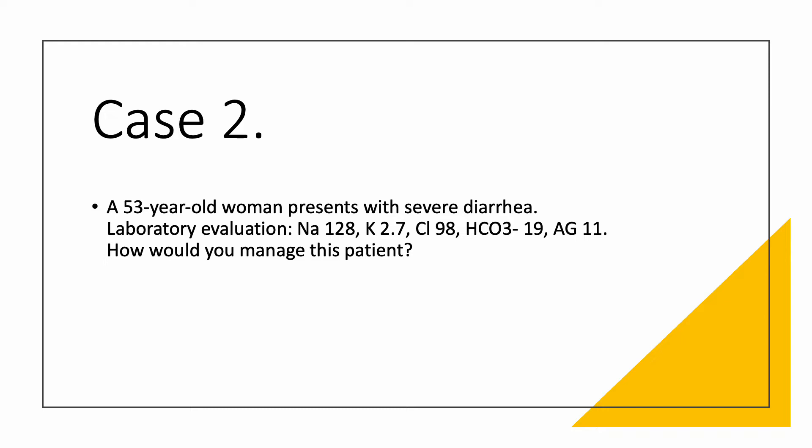The moment I say severe diarrhea, think non-anion gap metabolic acidosis. Here you have low bicarb, anion gap is normal, so probably that's what's going on. You're losing bicarbonate in the stool. You're losing potassium. You're losing sodium. So this really fits.